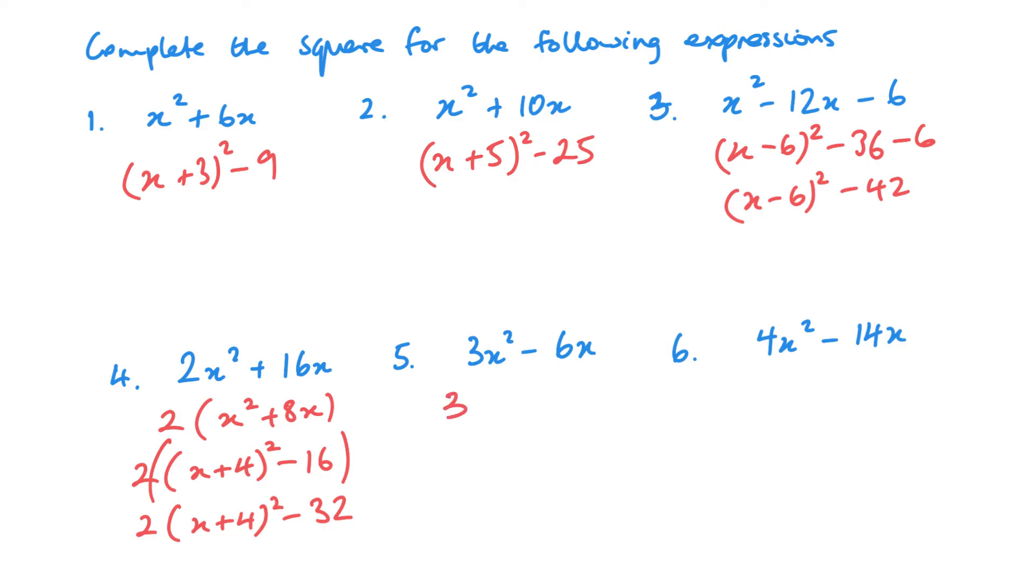Taking the 2 out first, x squared plus 8x, you can see that this is then going to be 3 times x plus 4 squared minus 16, so 2 times x plus 4 squared minus 32. Again with this one, taking the 3 out, I'll do this one with square brackets. So we get x minus 1 inside squared minus 1, so 3 times x minus 1 squared minus 3.